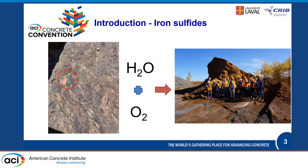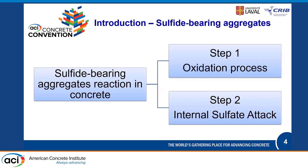When iron sulfates are present in concrete, we call them sulfate-bearing aggregates. There are two main reactions: an oxidation process and then an internal sulfate attack. It's really important to understand that if the oxidation process doesn't start, the internal sulfate attack will not develop, because the sulfur remains fixed with the iron in the mineral. Once oxidation starts, the internal sulfate attack is inevitable.